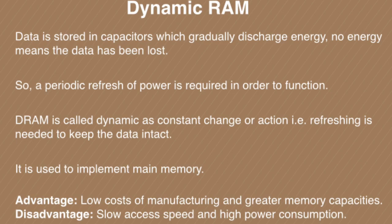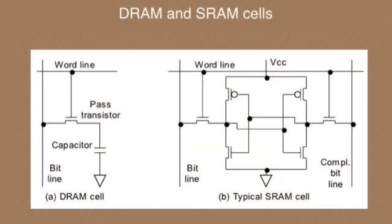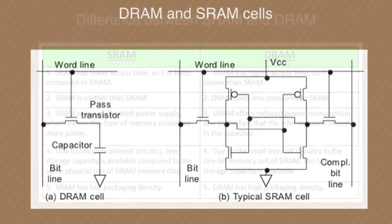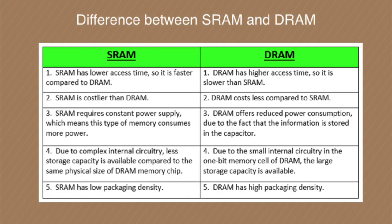Now let us see how these cells look. A DRAM cell consists of one transistor plus one capacitor, and based on the bit line and word line it decides which data to store. The SRAM cell consists of many transistors, with a bit line and a complementary bit line, and based on the word line it decides which data to store. Power is always supplied to the SRAM cell.